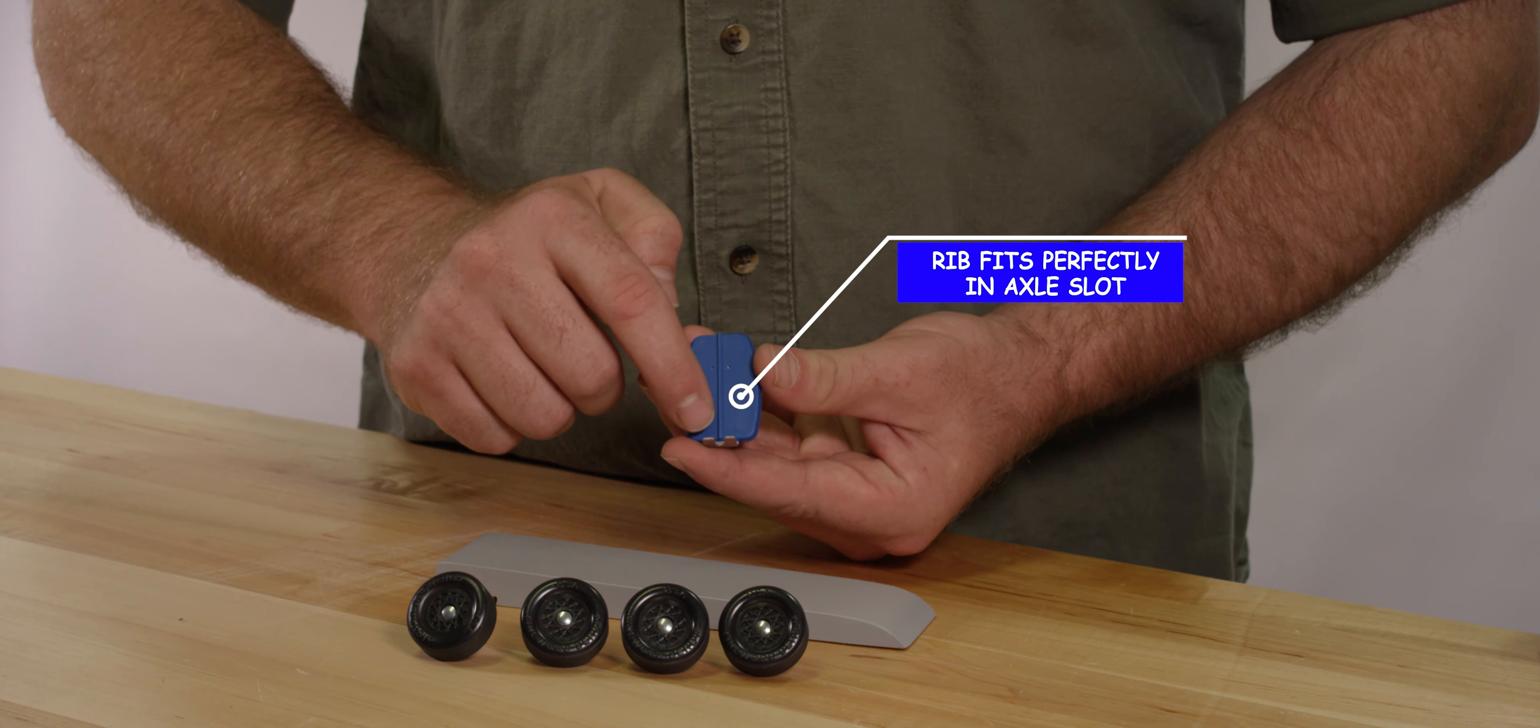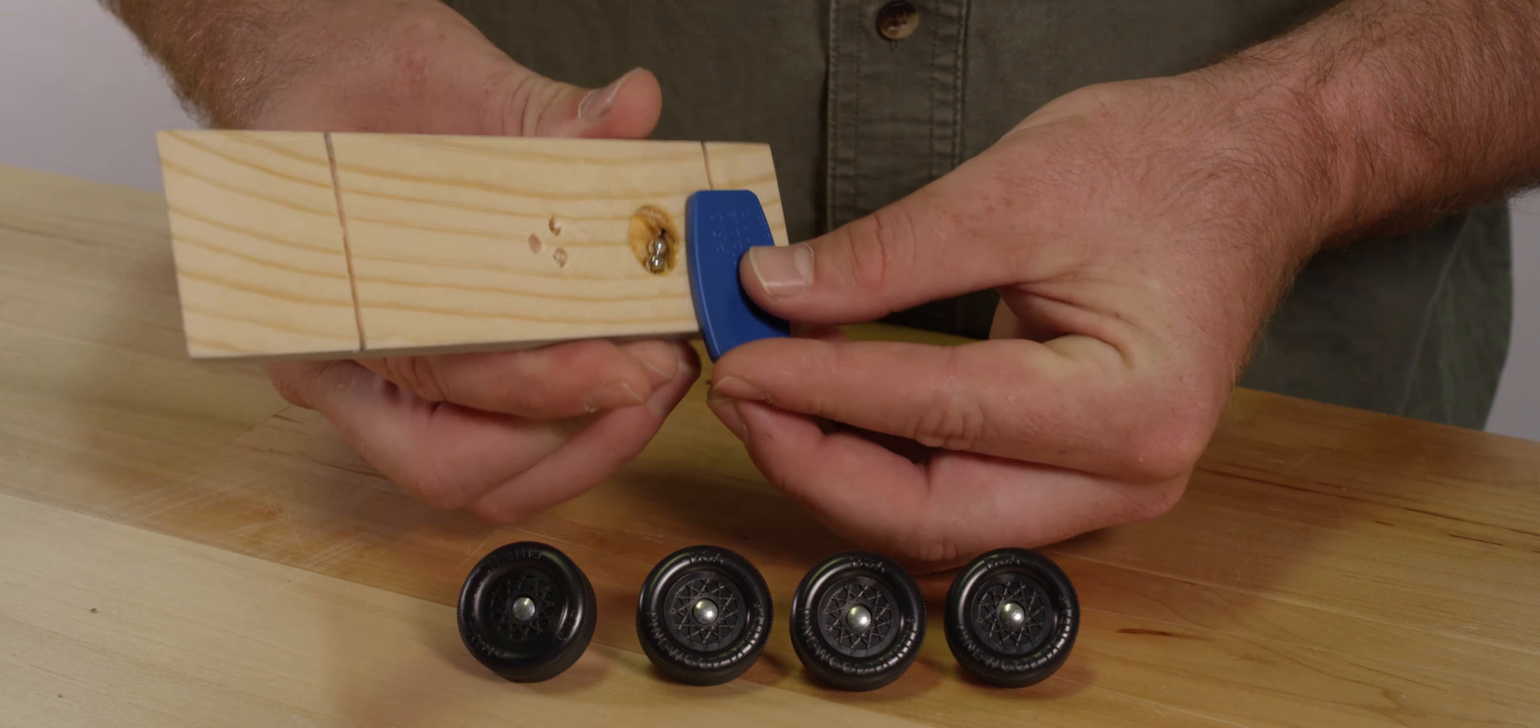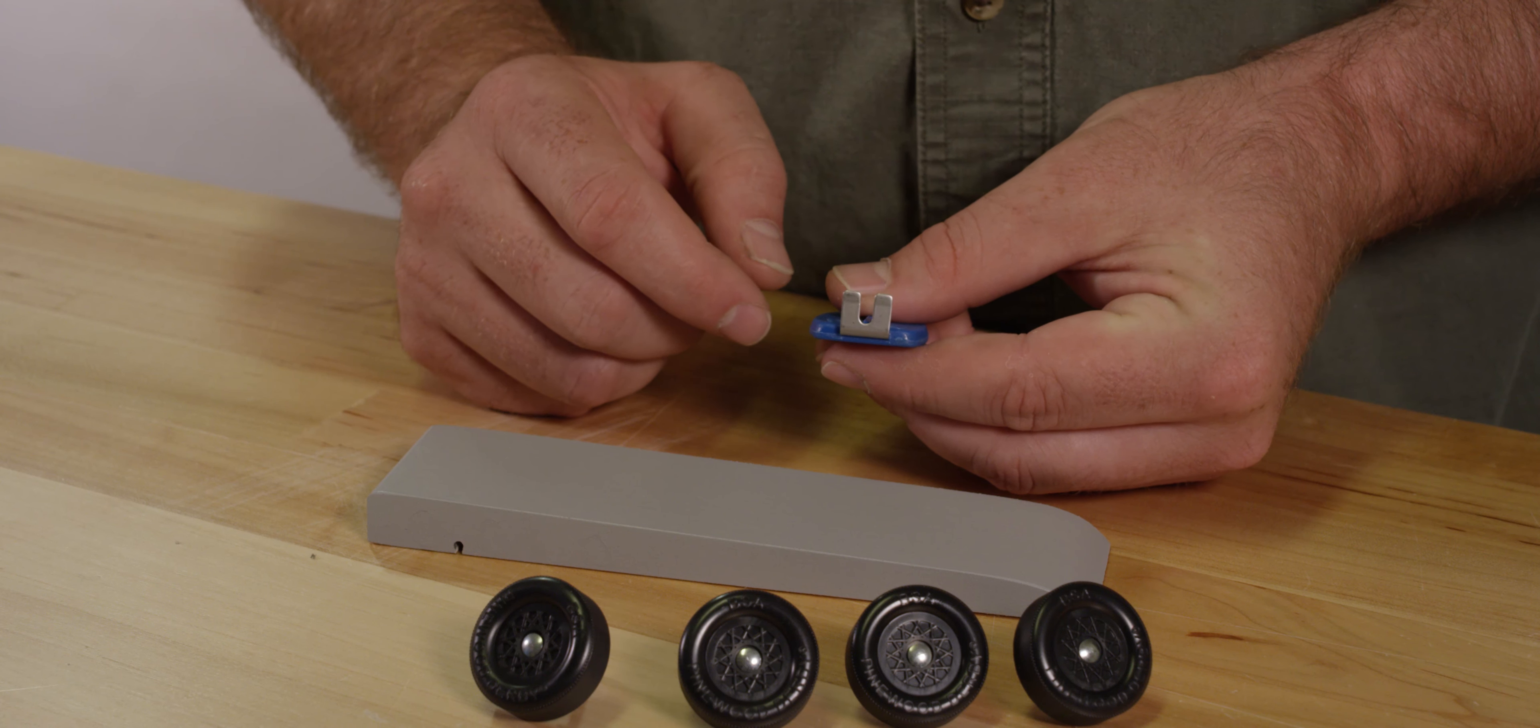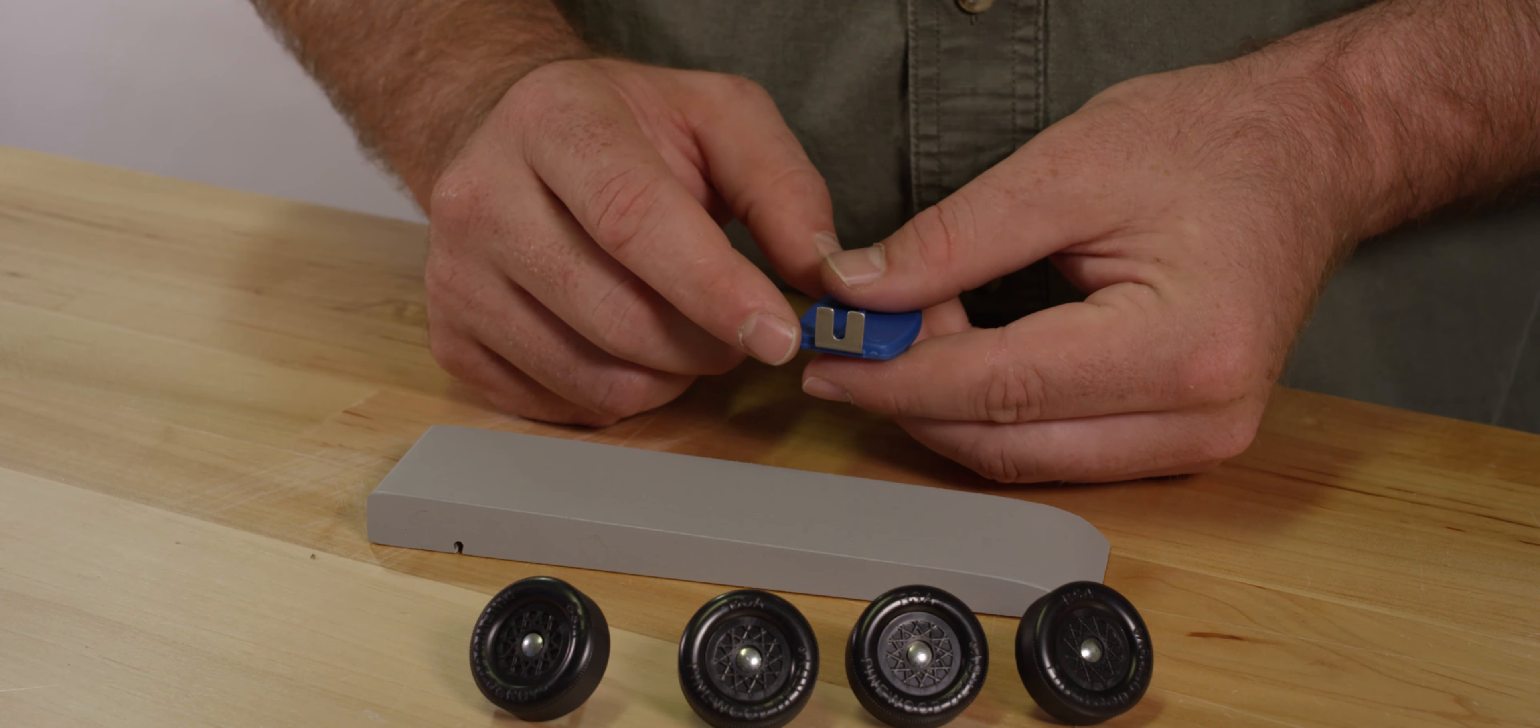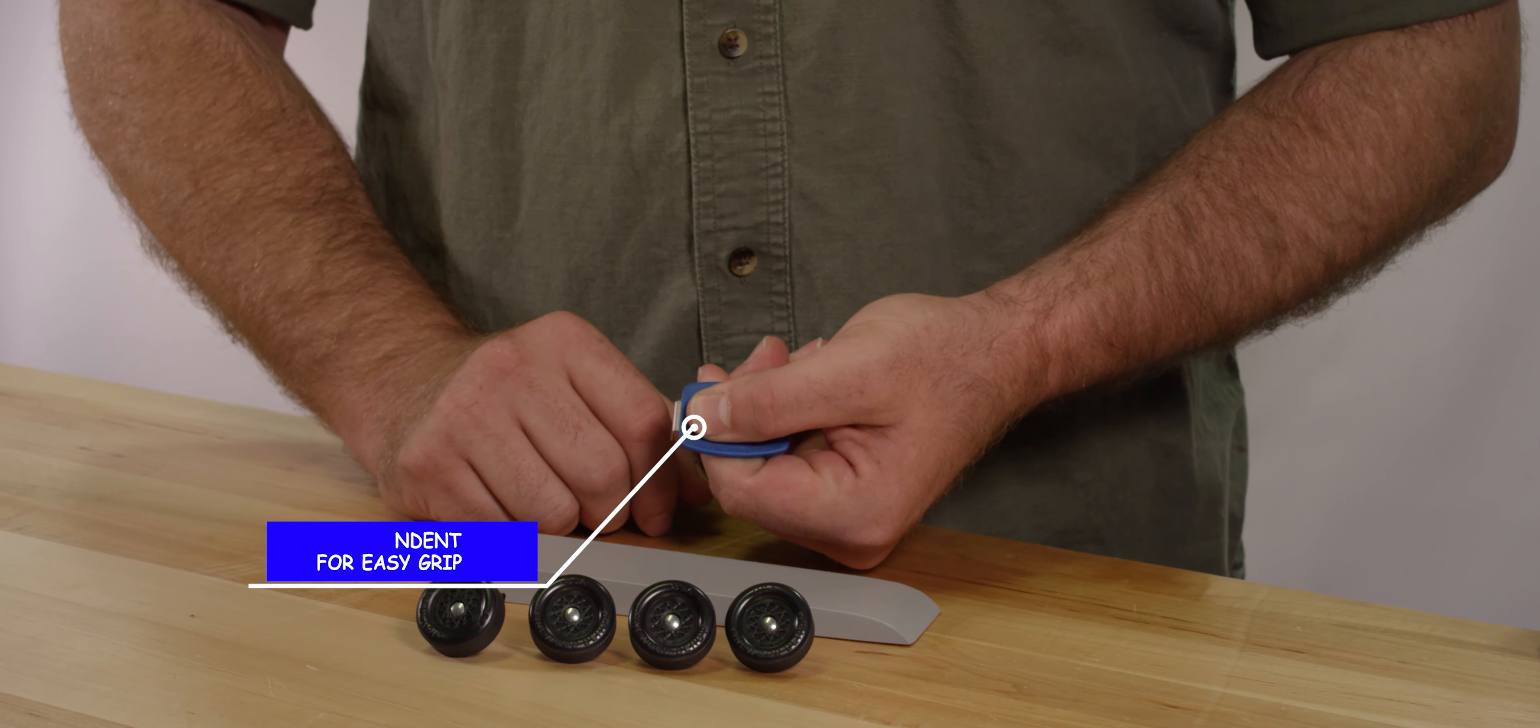The rib is designed to fit perfectly into the axle slot to guide your axle in straight. The edge of the rib has a concave channel providing a gentle curve for your round axle to slide in smooth and straight. The convenient thumb indent on the top helps to hold the tool in place while you insert your axles.